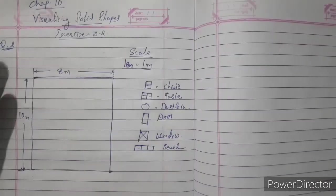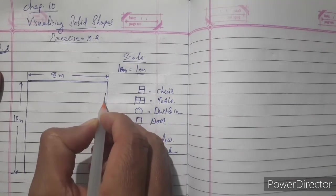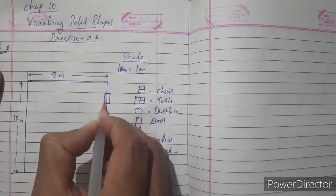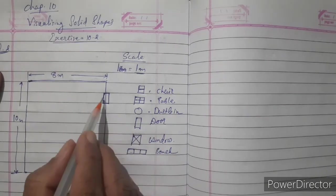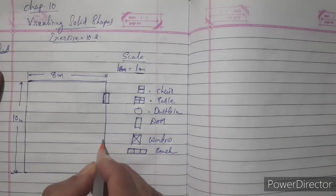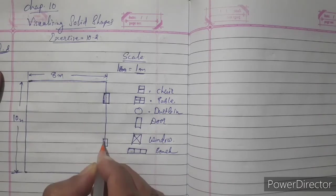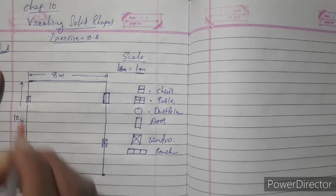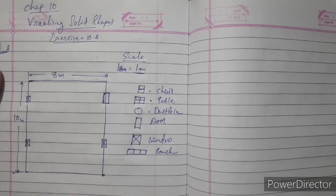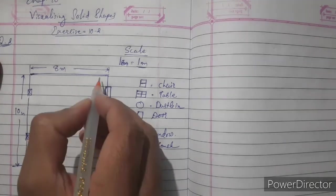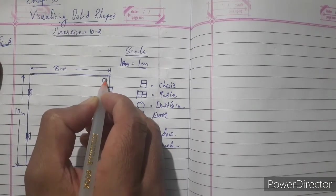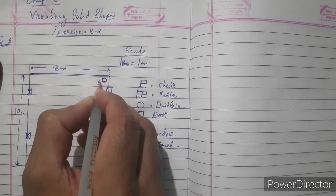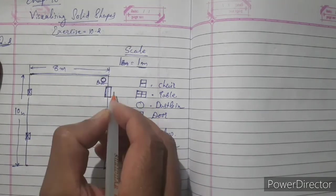So look here. Here our entrance is there, that is our door. So that is symbol for door is rectangle. Now in our class three windows are there. One here, second one is here, and third one is here. The three windows are there at right side. Inner corner, dust bin is there. That is the symbol of dust bin. We just write down here dust bin.